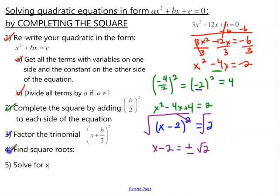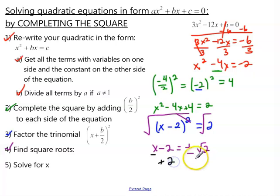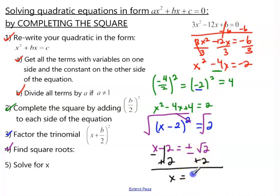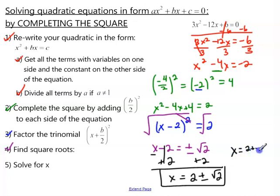Now we've completed step 4. In our final step, step 5, we solve for x. The x is not by itself, so to get rid of this minus 2, we add 2 to both sides. These cancel, and we're left with x. On the right side, we have a number inside the radical and a number outside — those cannot be combined. So we write it as x equals 2 plus or minus the square root of 2. That means x can equal 2 plus the square root of 2, or x equals 2 minus the square root of 2. There are two answers for x.